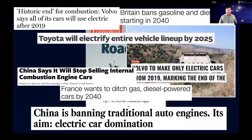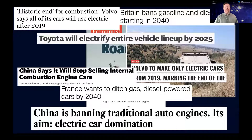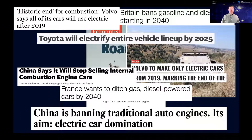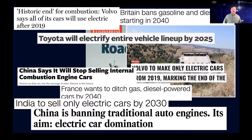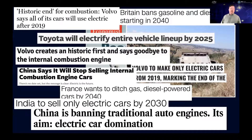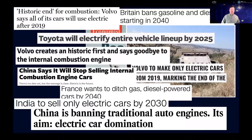Toyota will electrify their entire vehicle lineup by 2025. What Toyota actually said was that all vehicles will have electrified options in 2025 — which is anything from a mild hybrid all the way up to a fully electric vehicle. Many of those still have internal combustion engines in them. But as far as the news was concerned, they were going all electric. India to sell only electric cars by 2030. Volvo again: the news framed it as 'Volvo says goodbye to the internal combustion engine,' though that's not quite what Volvo said.